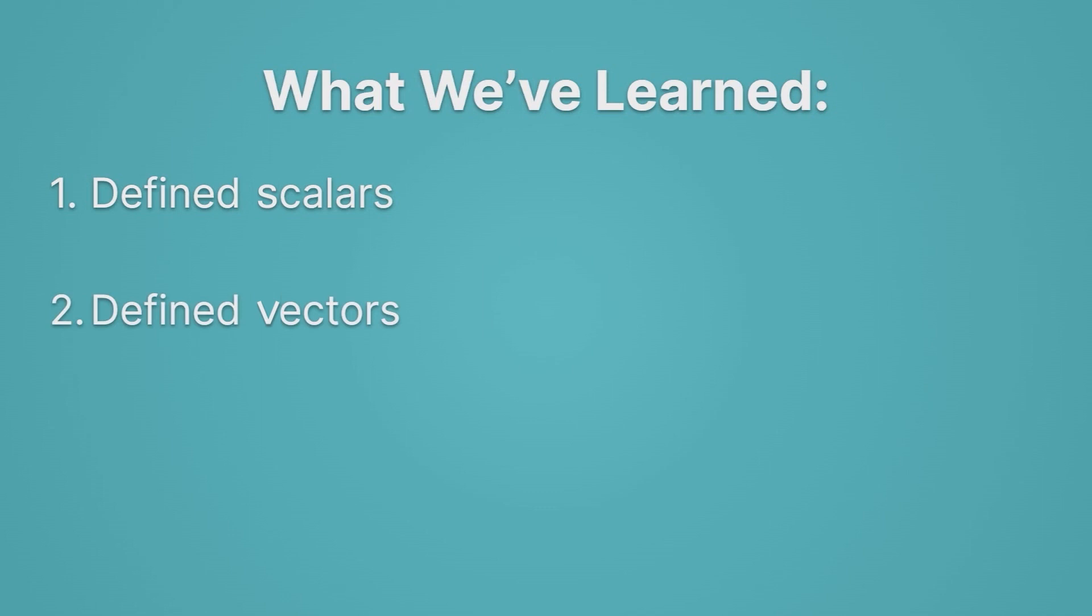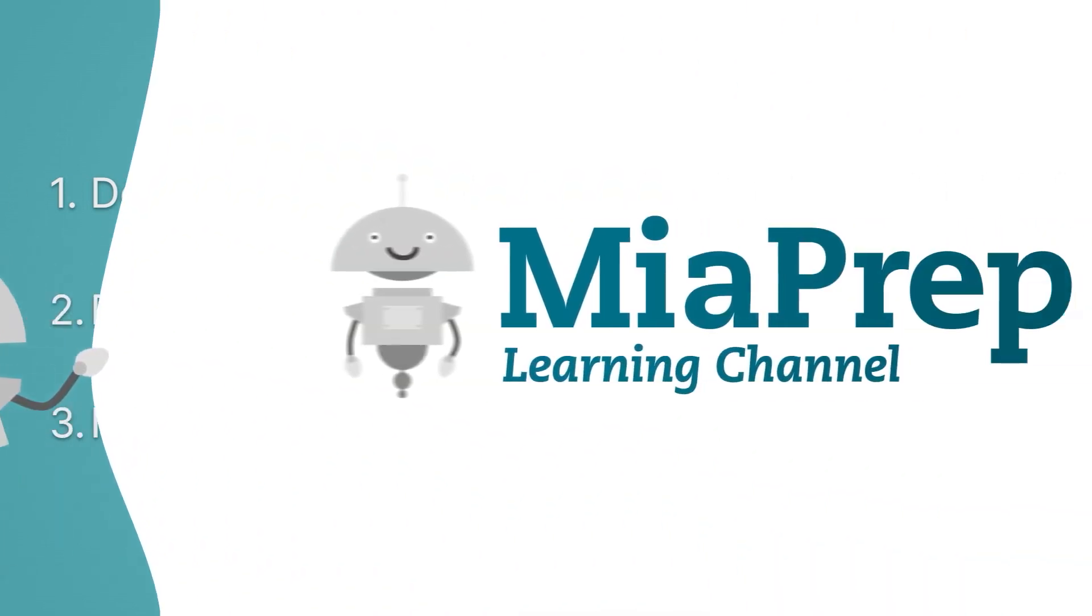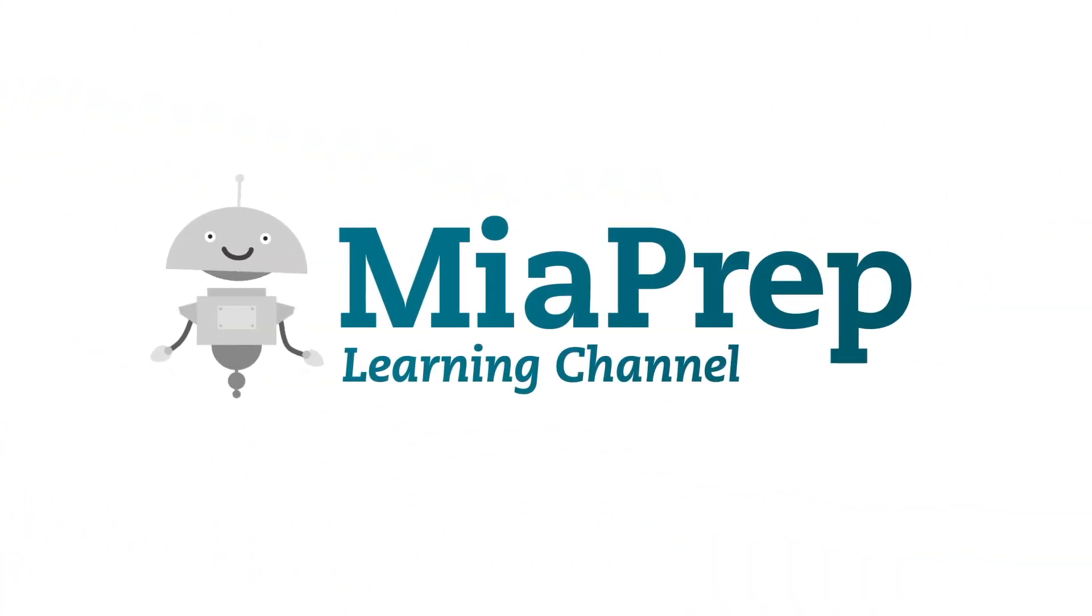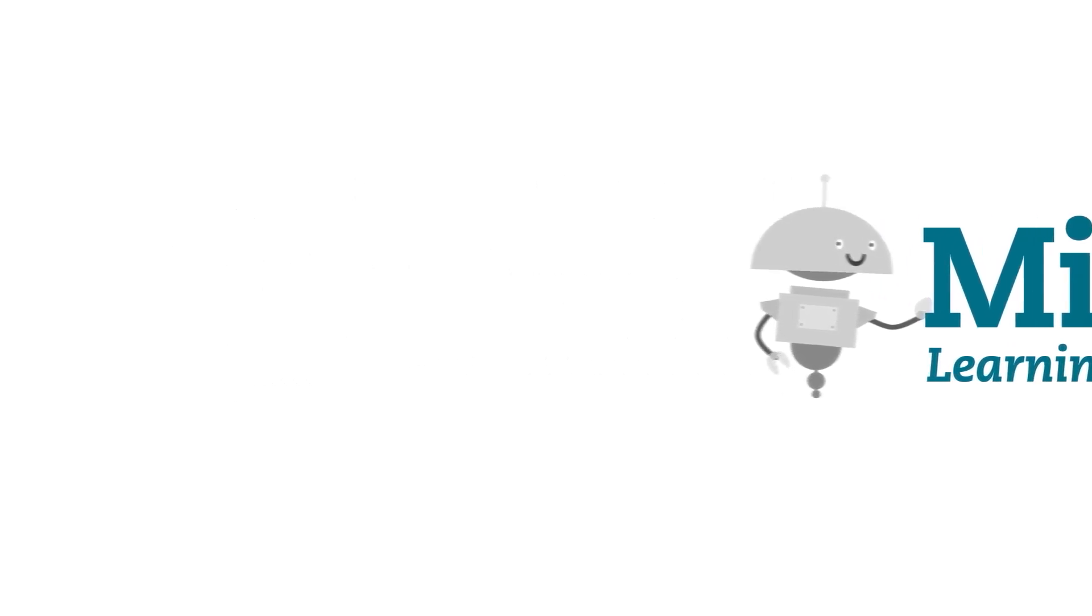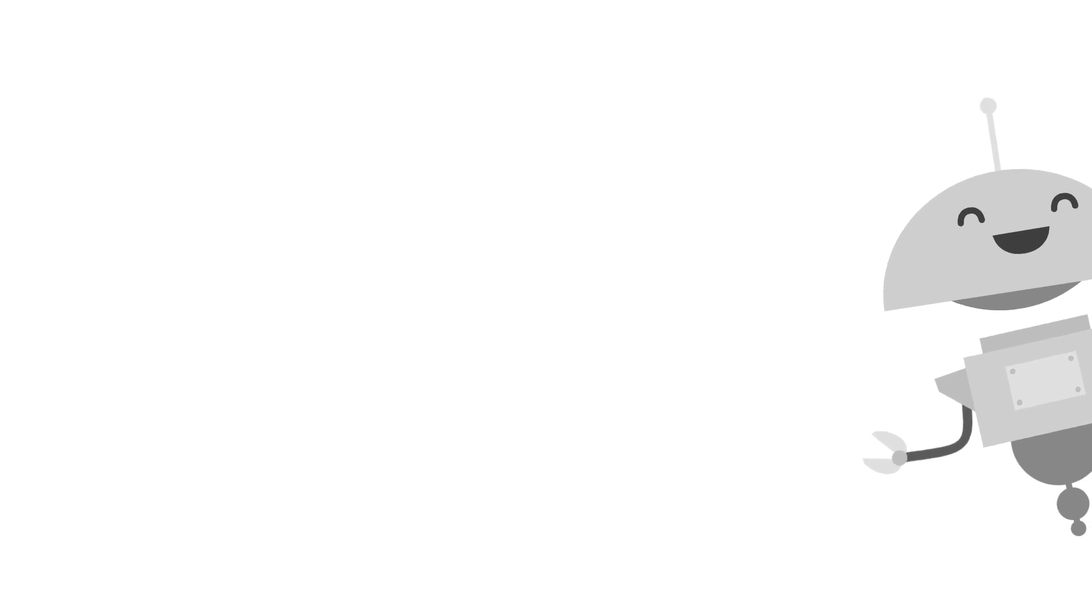Next, we defined vectors, which said we took something that has a size and a unit, and we added a direction. So the key difference with vectors is that there's a direction involved. And lastly, we learned to identify vectors and scalars. We'll see you next time. Thank you.